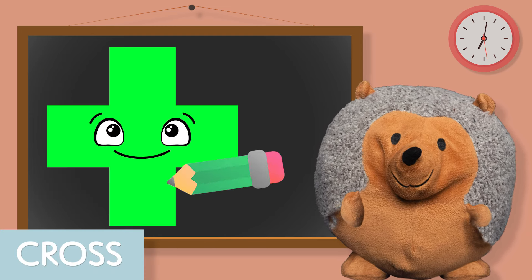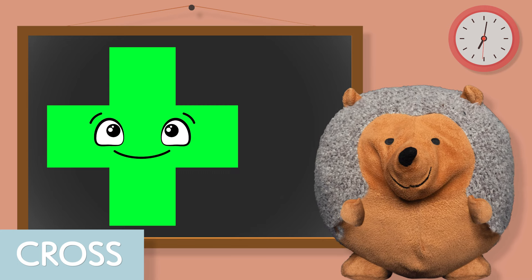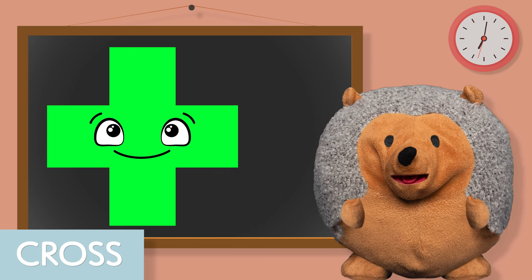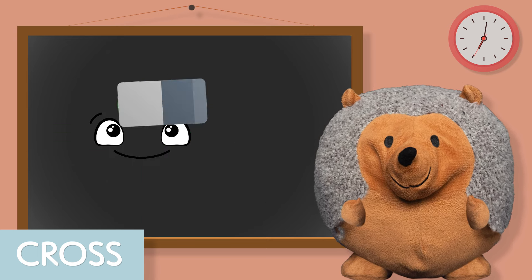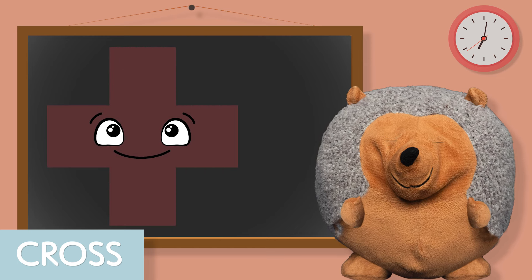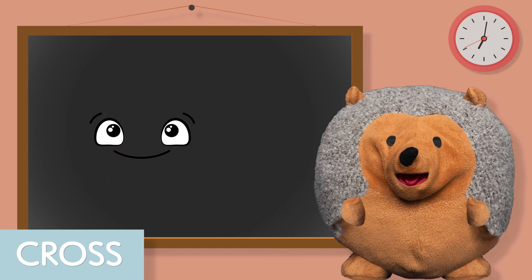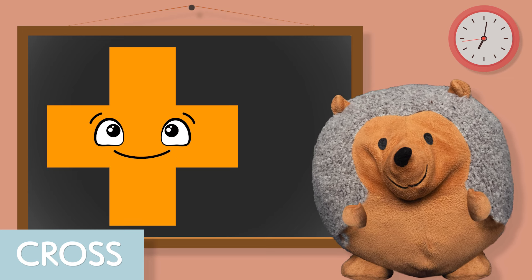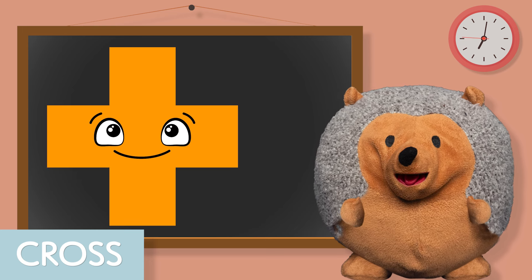And now we have a cross. And this cross is green. Next is a brown cross. And the last one is orange. Now we know what a cross is.